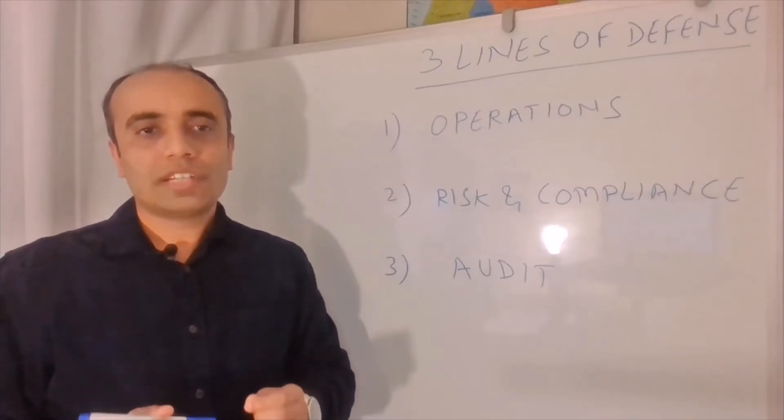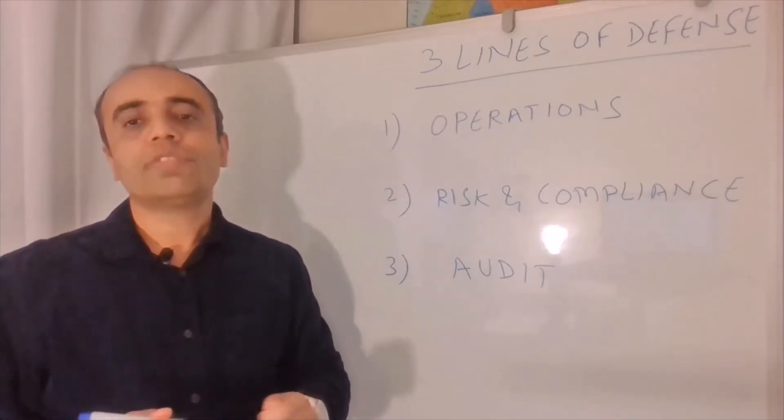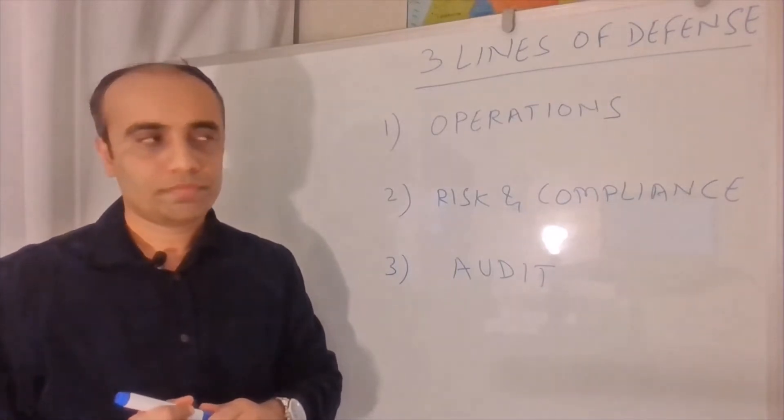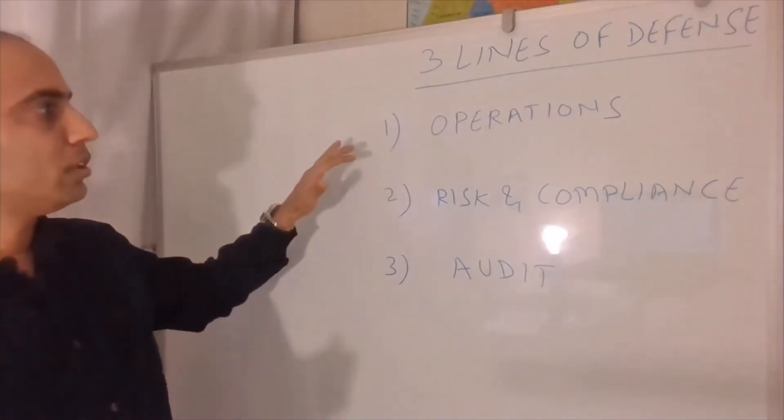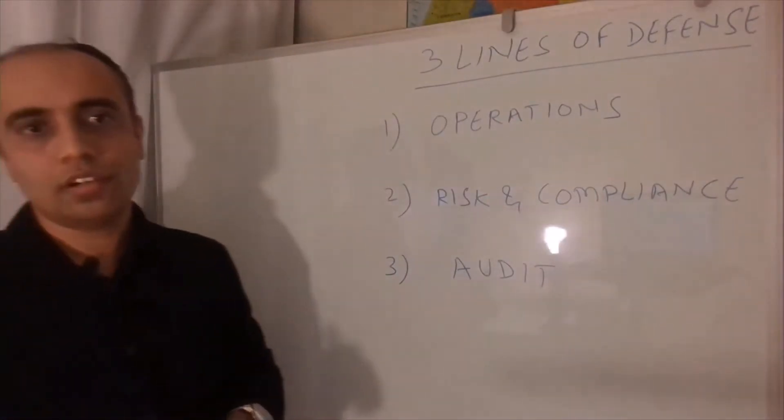Similarly, a company also needs some sort of safety net to mitigate the risk and achieve a strong control environment. Now let's talk about the three layers I've listed here one by one.